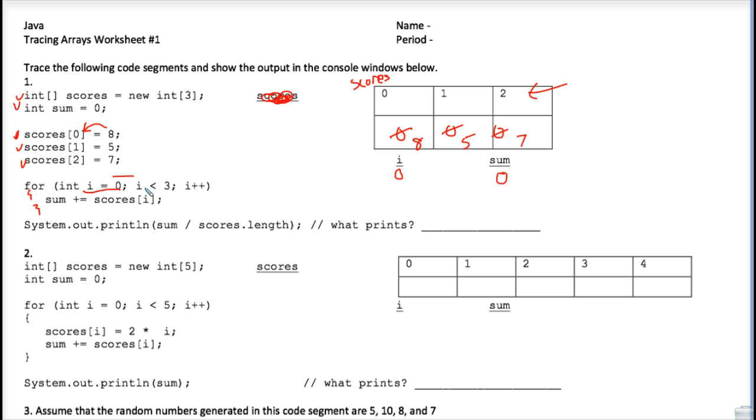We check to make sure that i is less than 3, and it is. So let's go through the loop. The plus equals means that you take whatever is currently stored in scores i and add it into the variable sum. Well, because i is currently 0, we're really checking to see what is currently stored in the position 0 of the array scores. Square brackets are being used here to indicate that this is an array, and we're looking at position 0, which is an 8.